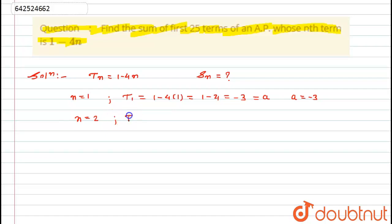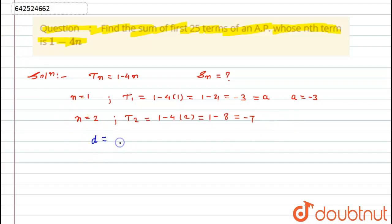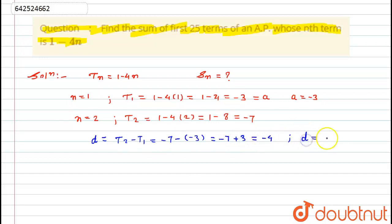Similarly, I will put n equal to 2 to get the second term: 1 minus 4 into 2, which is equal to 1 minus 8, which is equal to minus 7. Now, as we know the common difference d for an AP is equal to the second term minus the first term, which is minus 7 minus (minus 3), which is equal to minus 7 plus 3, that is minus 4. So I get the common difference d is equal to minus 4.